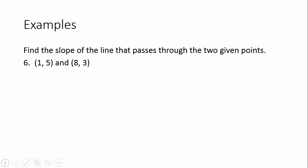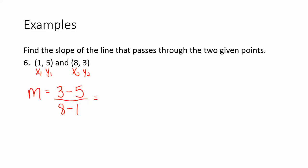Pause the video and try to find the slope between the two points on your own using the slope formula, then check your answer. Labeling x₁, y₁ and x₂, y₂, using the formula: y₂ minus y₁ is 3 minus 5 over x₂ minus x₁, which is 8 minus 1. On top, 3 minus 5 is negative 2. On the bottom, 8 minus 1 is positive 7. So the slope is negative two-sevenths — this cannot be reduced, so it's the final answer.